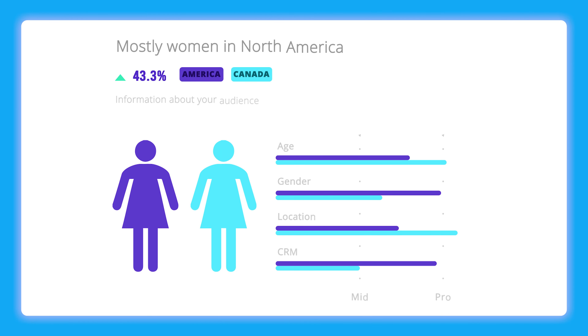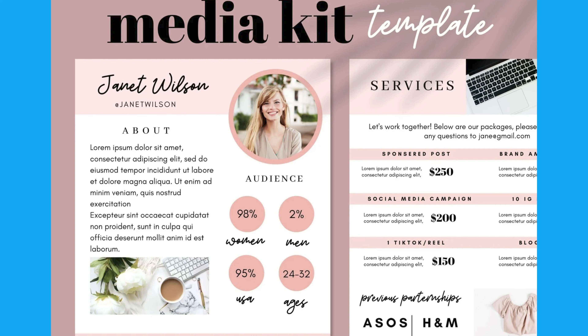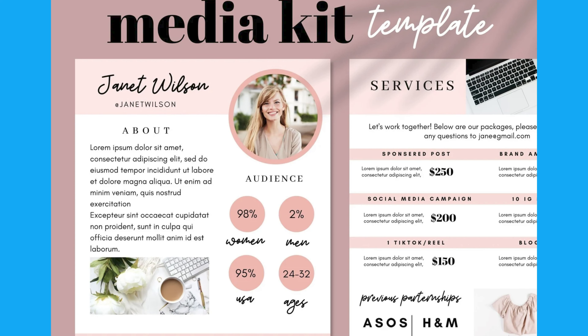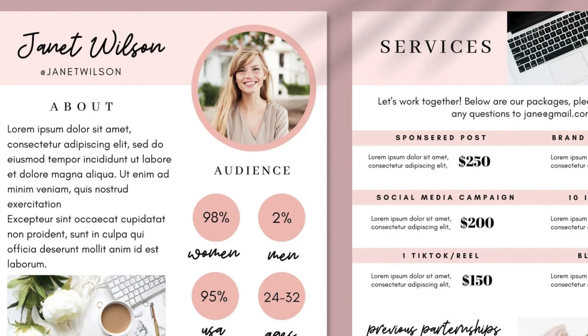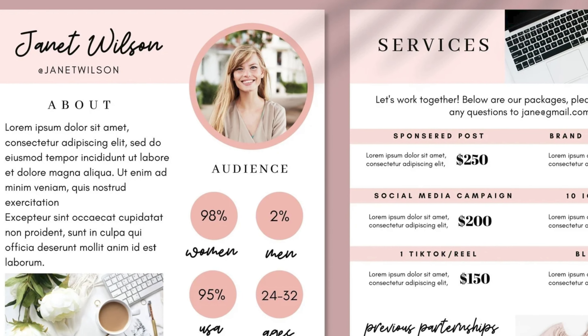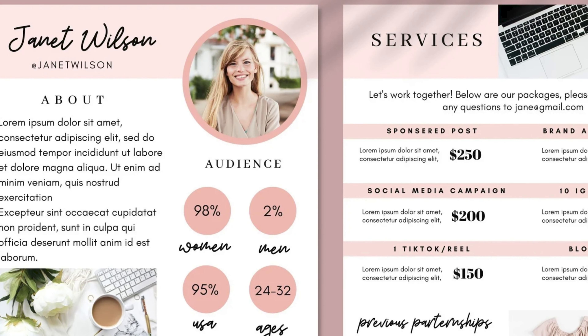A media kit is a document that outlines information about a social media page's following, their metrics, their engagement rate, and any other details that a brand would need to know in order to pay them for a sponsorship. It could be how many views they get on average of a video, followers across all platforms, or any information just like that.